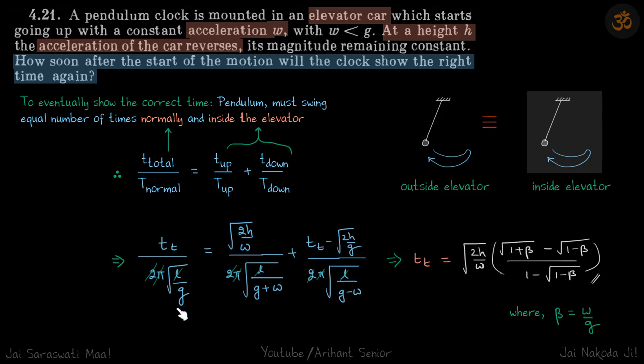Normal time period is 2π√(L/G), and when it is going up, then effective gravity becomes G plus W, so time period will be 2π√(L/(G+W)). And when it's coming down, then time period will be 2π√(L/(G-W)).